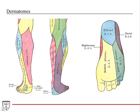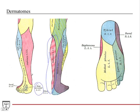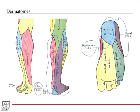Regarding dermatomes: follow what your professor specifically tests, and for board exams know the general distribution. The saphenous nerve covers the anterior-medial aspect of the leg including medially on the posterior side. The superficial peroneal nerve covers the lateral mid-distal leg and dorsum of the foot, except the web space between the first and second toes, which is the deep peroneal nerve. The sural nerve covers the posterior-lateral leg and foot. The medial and lateral plantar nerves (from tibial) cover the plantar surface.